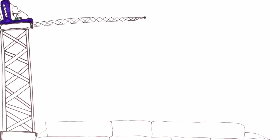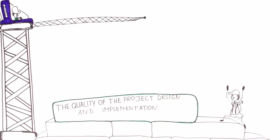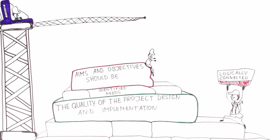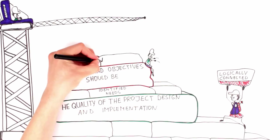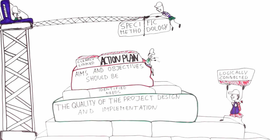The quality of the project design and implementation outlines the quality of the project structure and main content. When it comes to project structure, all parts should be logically connected. The aims and objectives should be clearly linked with identified needs, broken down into an action plan and specific methodology.